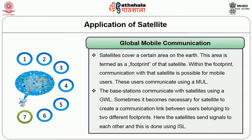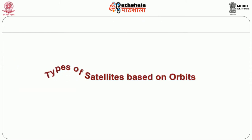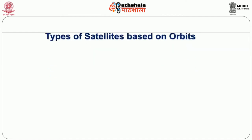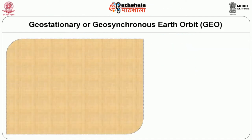Sometimes it becomes necessary for a satellite to create a communication link between users belonging to two different footprints. Here, the satellites send signals to each other, and this is done using an inter-satellite link. Coming to the types of satellites based on their orbits, the first satellite-based orbit is geostationary or geosynchronous earth orbit, shortly called GEO.